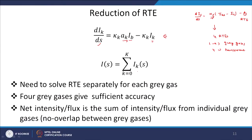Once we have the solution for each individual RTE, the total intensity is simply the sum of individual intensities: I = Σ (k=0 to 3) I_k, where k=0 is the transparent gas and k=1, 2, 3 are the gray gases. We need to solve the RTEs individually for each gray gas and then add the results. This gives reasonably good accuracy as we will see in the example.